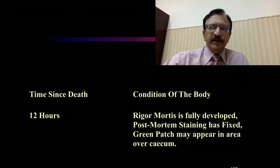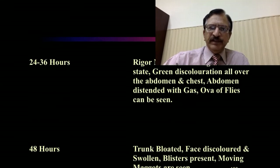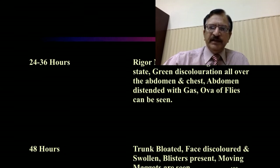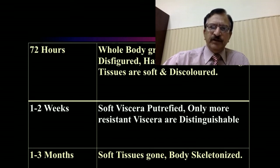Summary of findings regarding time since death and condition of the body: after 12 hours, rigor mortis is fully developed, post-mortem staining has fixed, and a green patch may appear in the right iliac fossa with start of putrefaction. After 24 to 36 hours, rigor mortis is in a passing-off state, and the abdomen and chest are distended with gas; ova of flies can be seen. After 48 hours, the trunk is bloated, the face is discolored and swollen, blisters start appearing, and maggots may be seen moving on the body. After 72 hours, the whole body is bloated and disfigured, hair and nails can be easily detached, and tissues are softening.